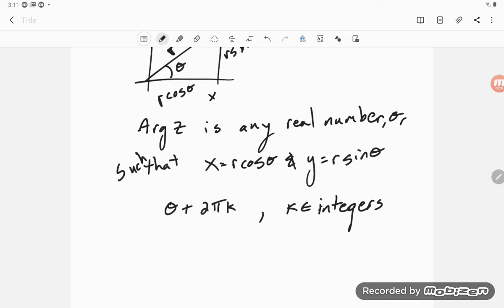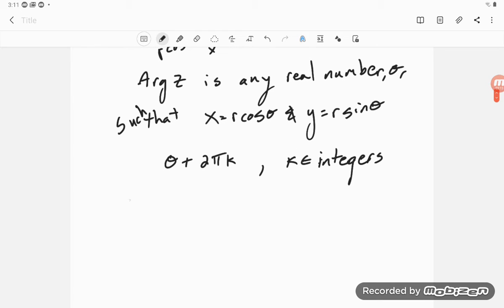So we can always do something like that. Now, the principle argument of z is our theta between minus pi and pi.